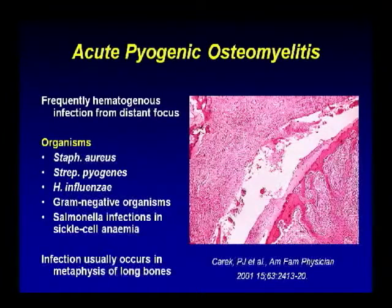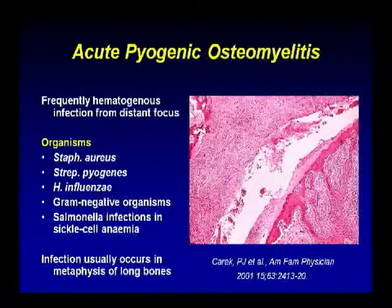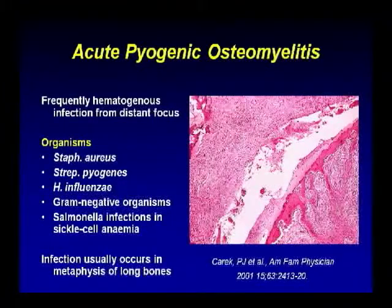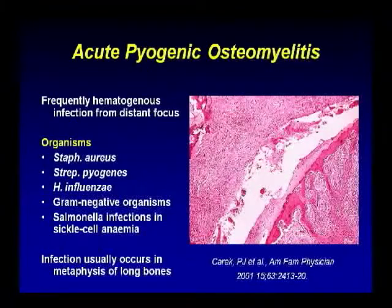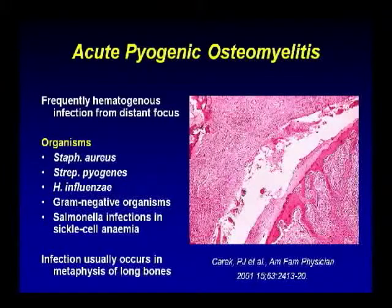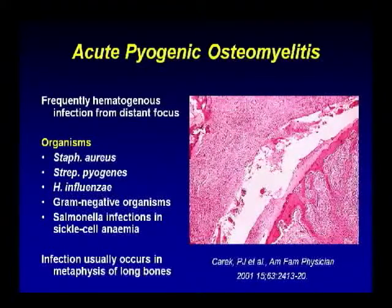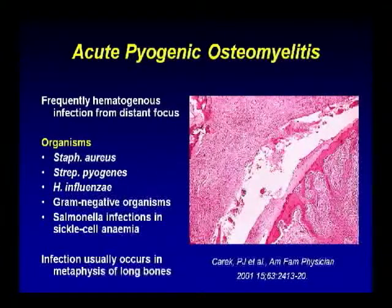Acute pyogenic osteomyelitis is most frequently acquired in a hematogenous fashion, coming from a distant focus. The organisms that cause it most frequently are Staphylococcus aureus, Streptococcus pyogenes, and Haemophilus influenzae, along with some gram-negative organisms. Salmonella infections are typical for sickle cell anemia, though Staphylococcus aureus is also found in sickle cell patients. These infections are typically found at the metaphysis of long bones.